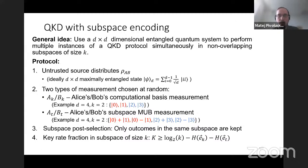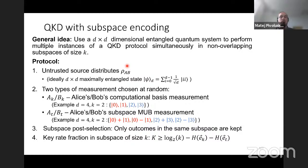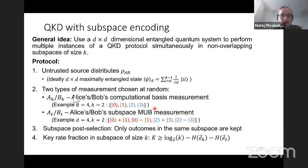The protocol we implement is a relatively new protocol called QKD with subspace encoding. The idea is to use a D×D dimensional entangled quantum system to perform multiple instances of a QKD protocol simultaneously in non-overlapping subspaces of size K. You first assume that you distribute an entangled state rho-AB, which ideally would be a D×D maximally entangled state. There are two types of measurements chosen at random for both Alice and Bob: one is a computational basis measurement, and another — the test measurement — is a subspace mutually unbiased measurement.